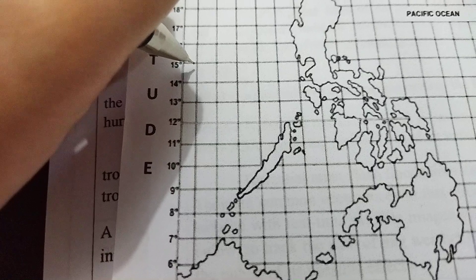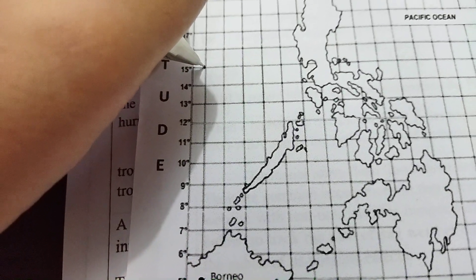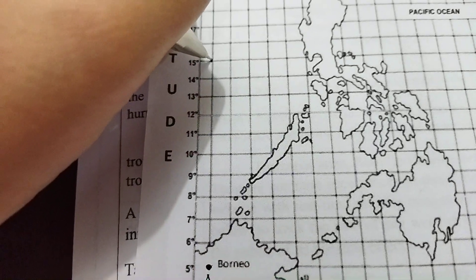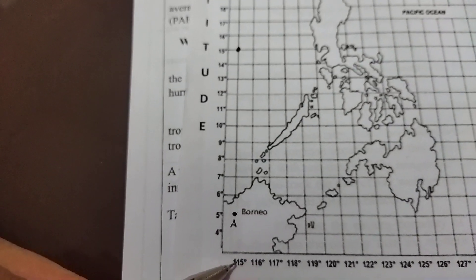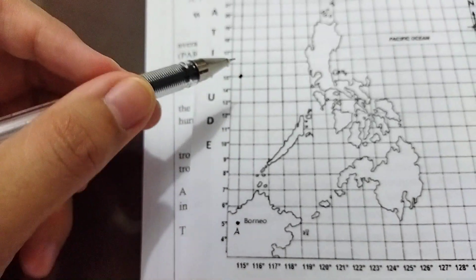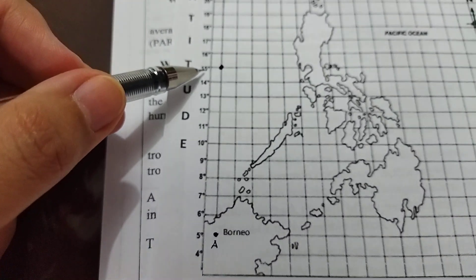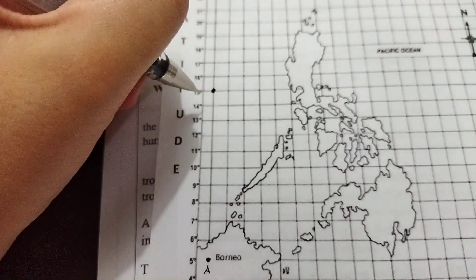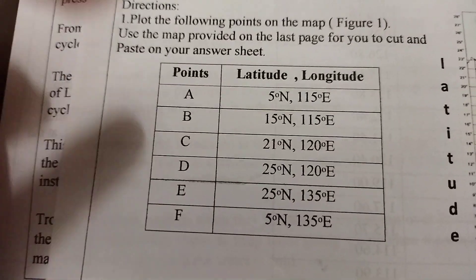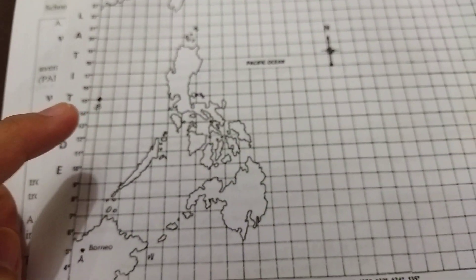This is our point B. Point B is 115 degrees east and 15 degrees north. That is our point B. We label the point. Next, you are going to plot C, D, E, F. It's your turn to plot the points. After you plot all the points on the table, turn to the back page.